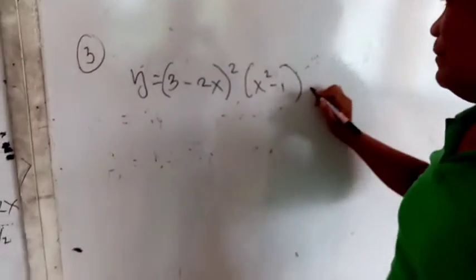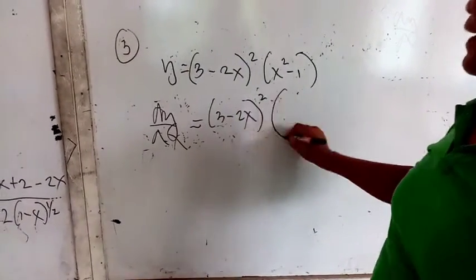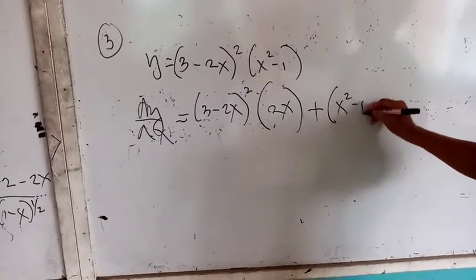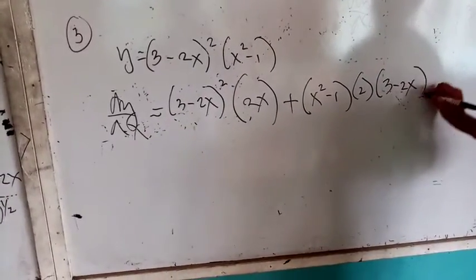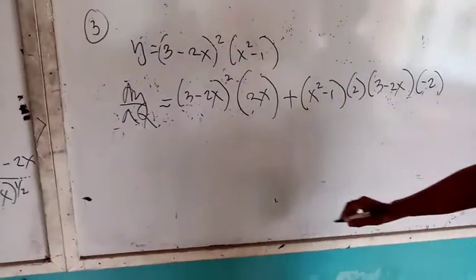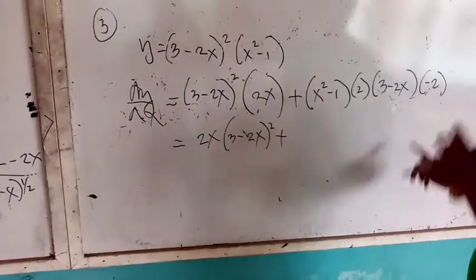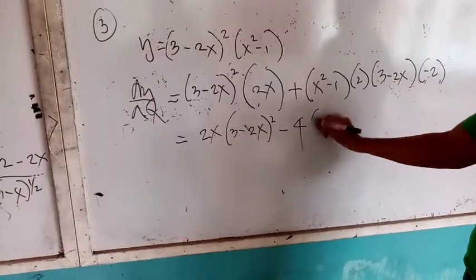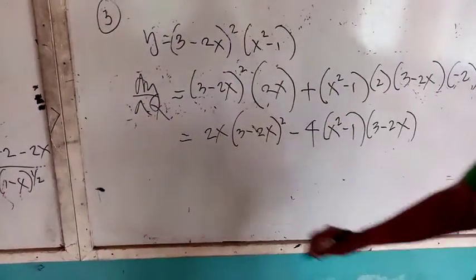Another demonstration for the product derivative: we differentiate y. The derivative of y with respect to x will be the first, 3 minus 2x squared, times the derivative of the second, which is 2x — derivative of constant is 0. Plus the second term, x squared minus 1, times the derivative of the first. The exponent brings down 2 times your base 3 minus 2x, multiplied by the derivative of your base — derivative of constant is 0, derivative of negative 2x is negative 2 — times negative 2.